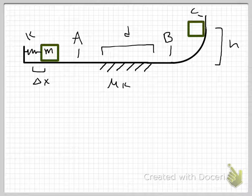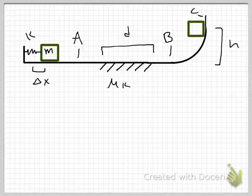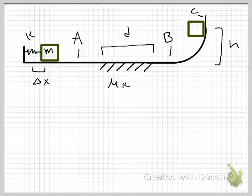We're going to be asked typically three things about the motion of this crate. We're going to be asked for the speed at A — that is, after it leaves the spring, how fast is it going? We're going to be asked for the speed at B — that is, after it passes over the frictional patch, how fast is it going? And we're going to be asked how high up the ramp the crate goes — what is the height h at which the crate stops?